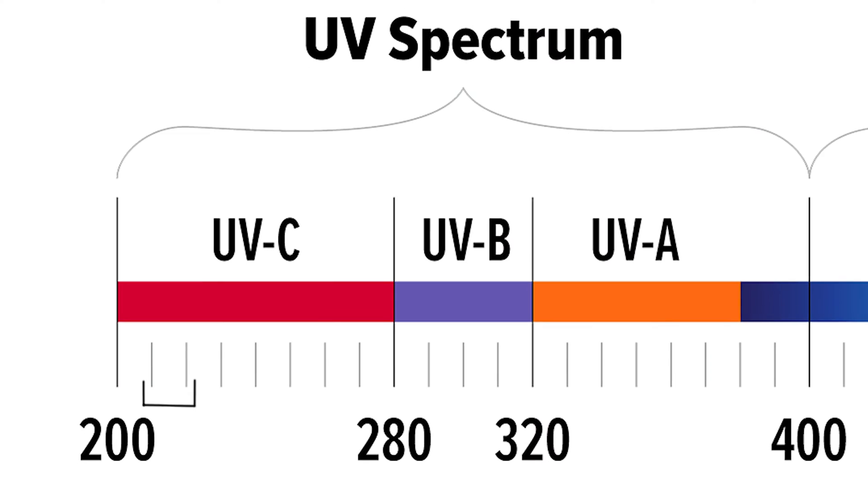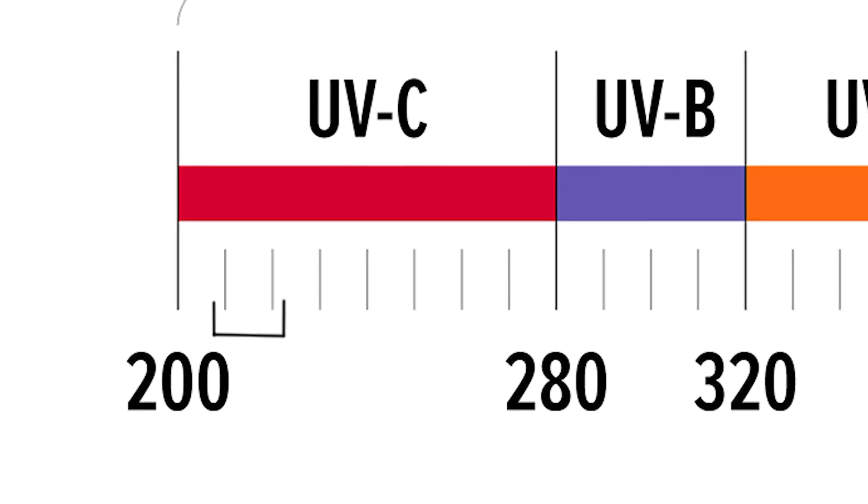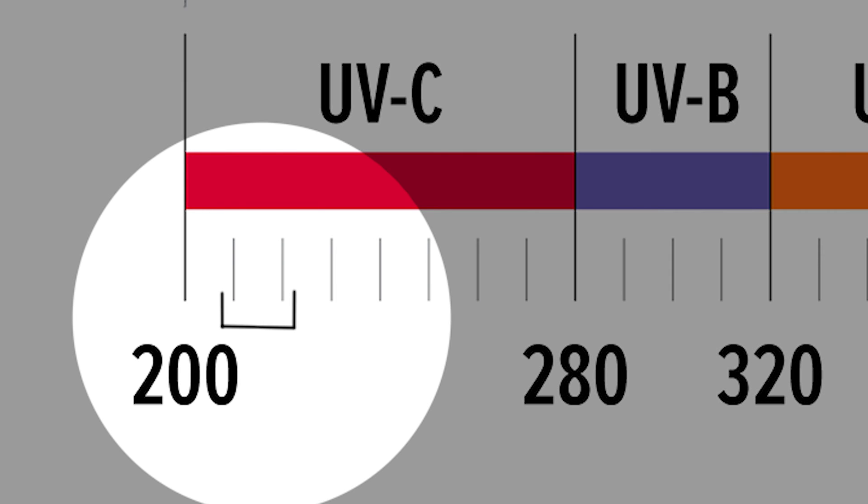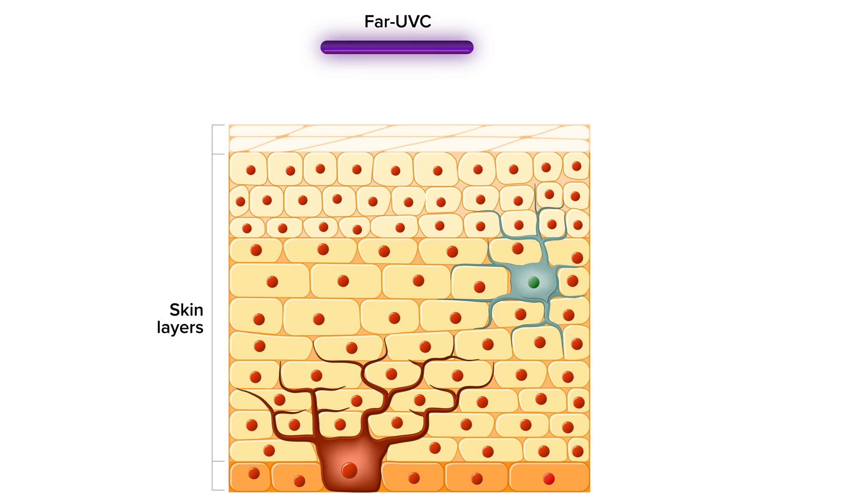Another fixture option uses UVC between 208 and 222 nanometers, called far UVC. Scientists have started to focus on this technology and found that it can disinfect, but is not harmful to skin and eyes. That means the fixtures can run constantly.